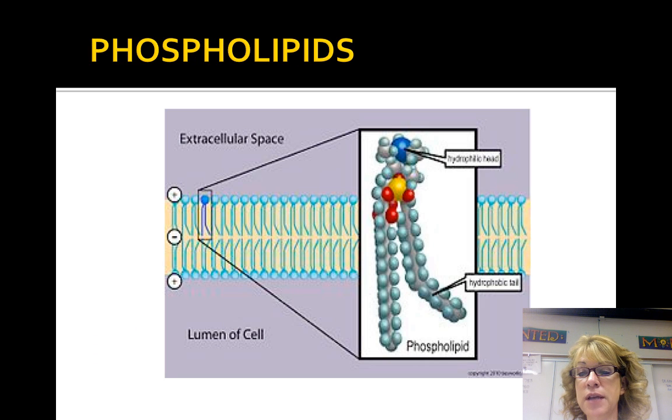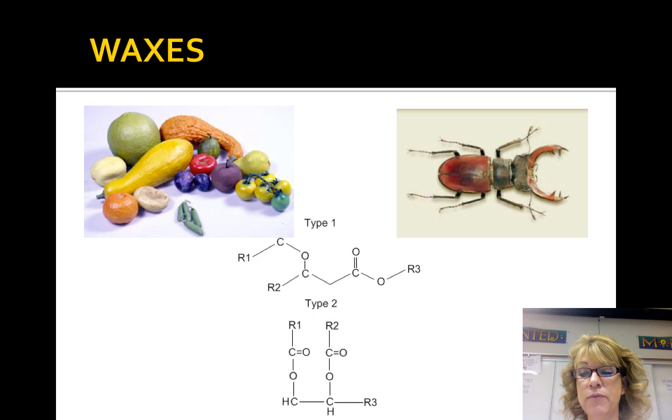Phospholipids are the major component of cell membranes. They're similar to fat but contain phosphorus and have two fatty acids, not three. We will discuss them further when we look at cells. Waxes have one fatty acid and an alcohol. They're more hydrophobic than fats. We find them on the natural coating on fruits. Insects have waxy coatings to keep them from drying out.